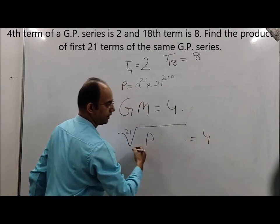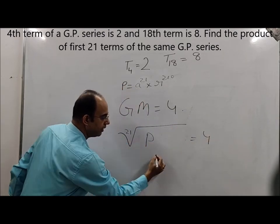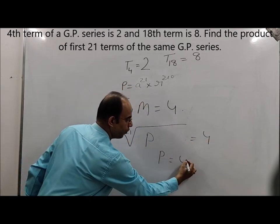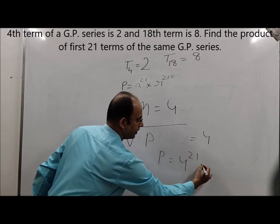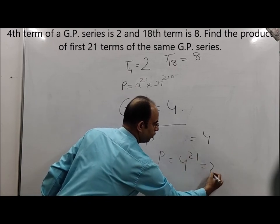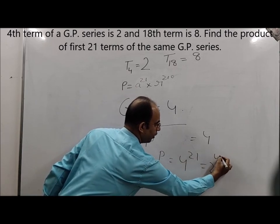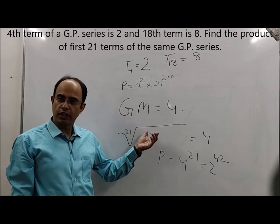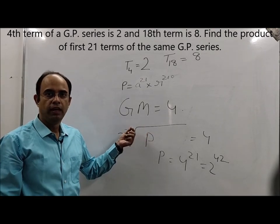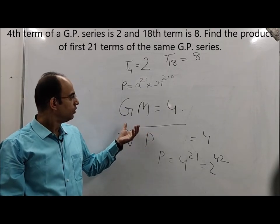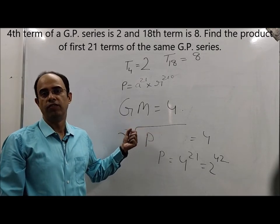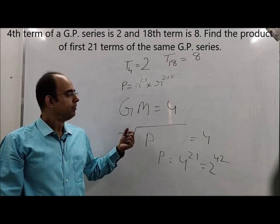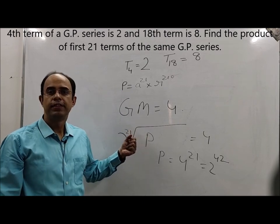The 21st root of P equals 4, therefore P = 4²¹ = 2⁴². So by the third method also we get 2⁴². This is the best way of solving, but you need to know the concept involved. Thank you.